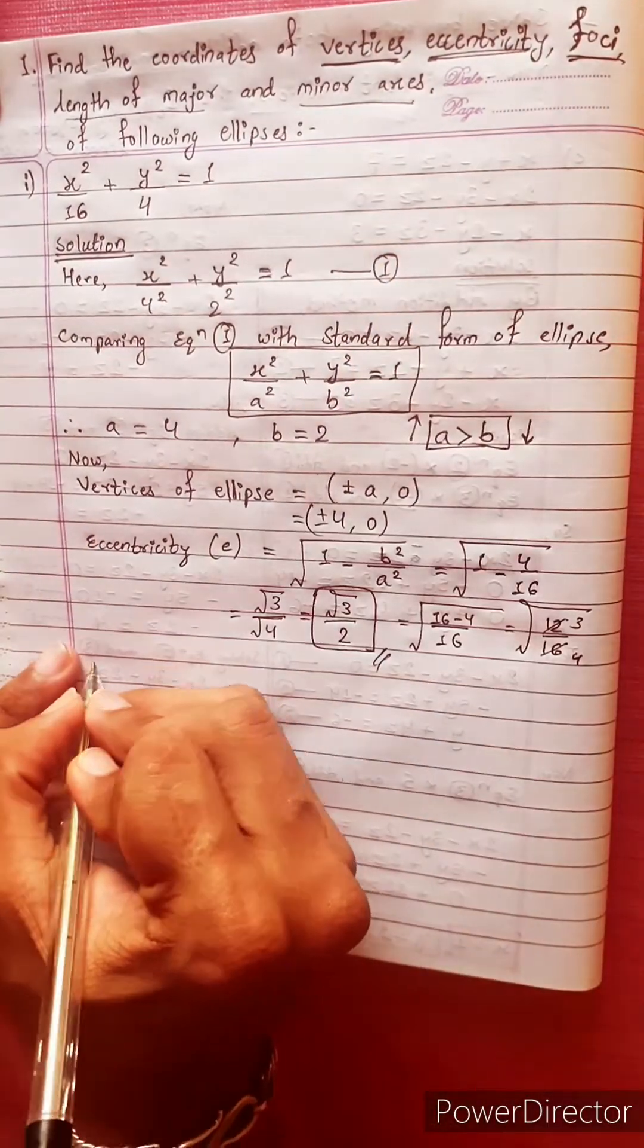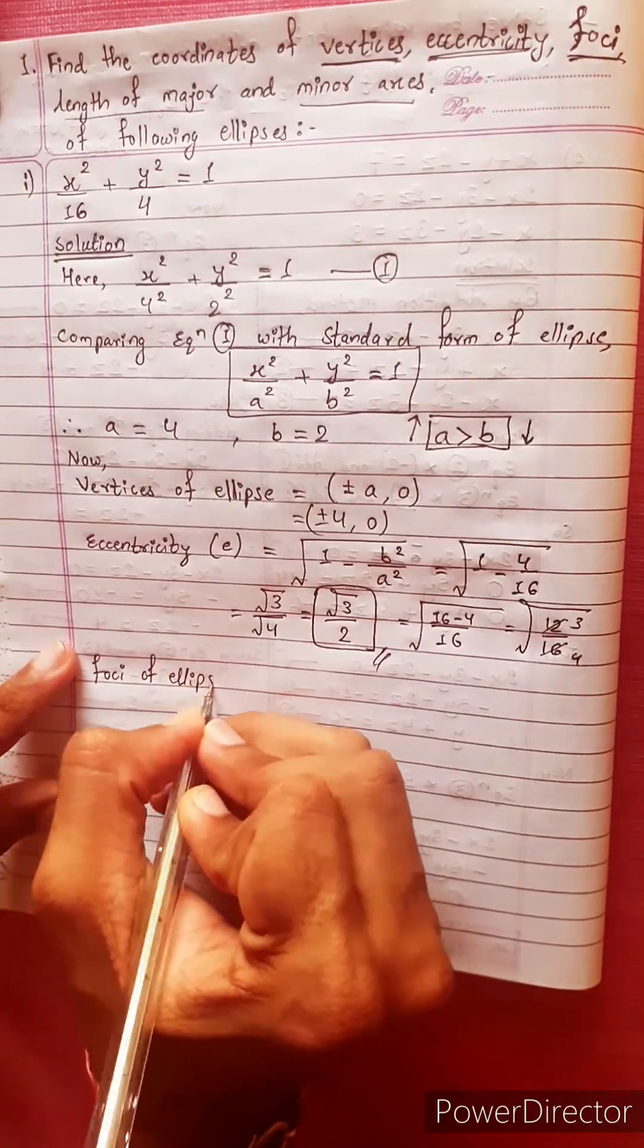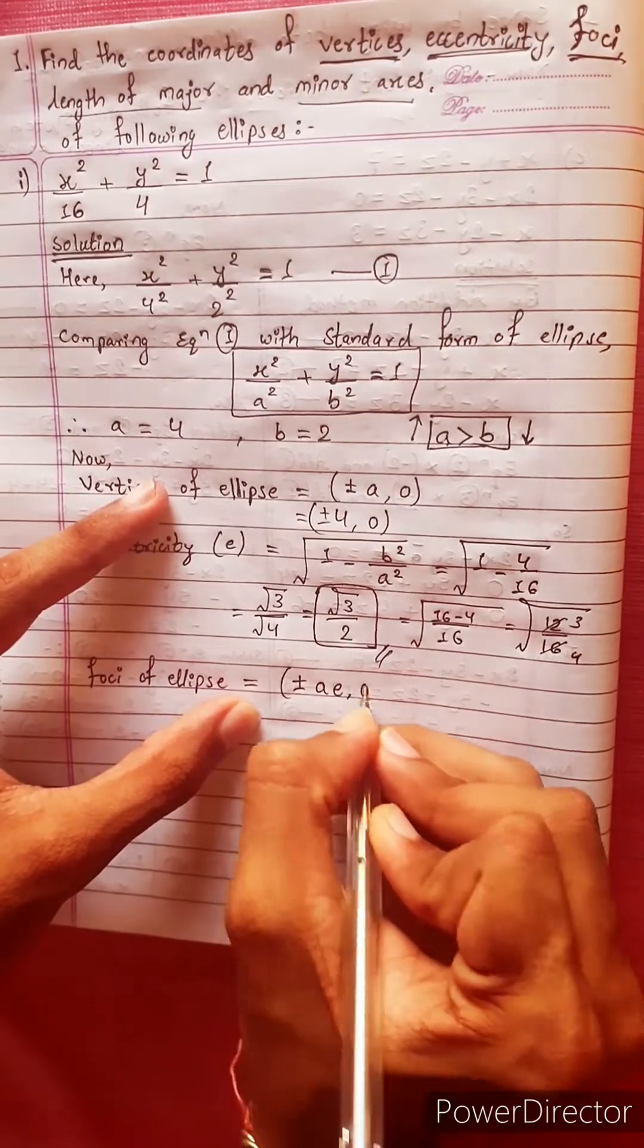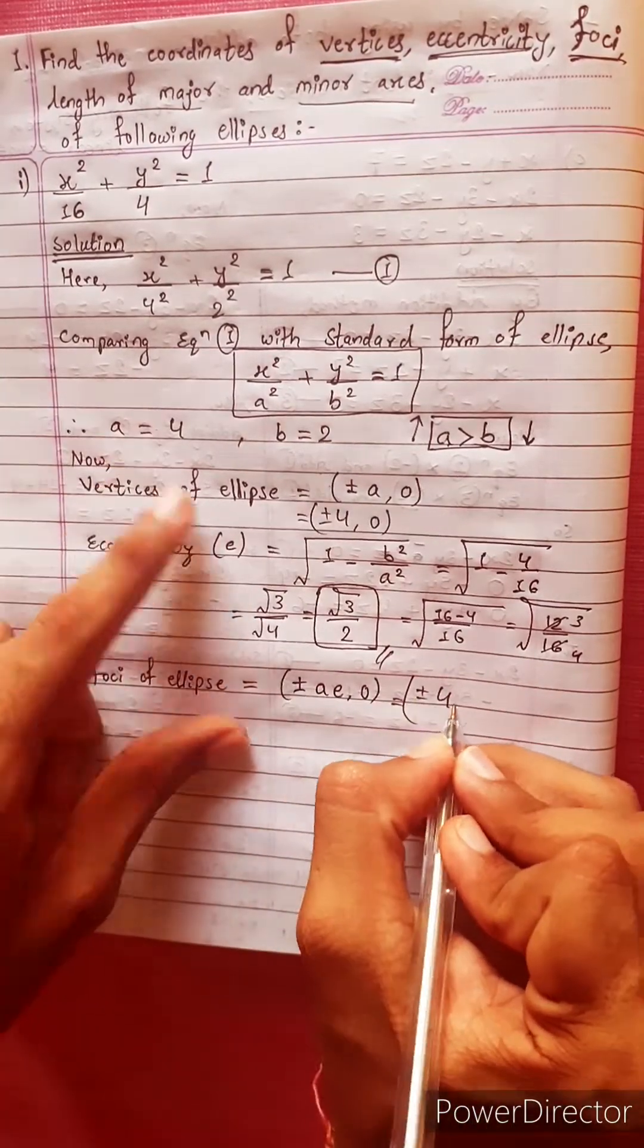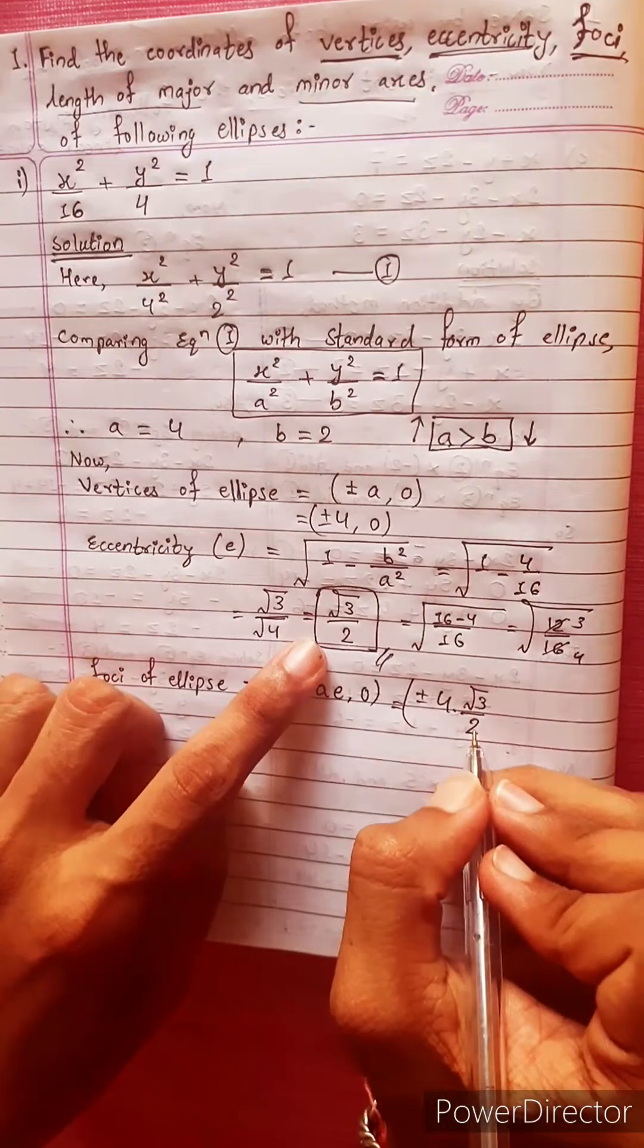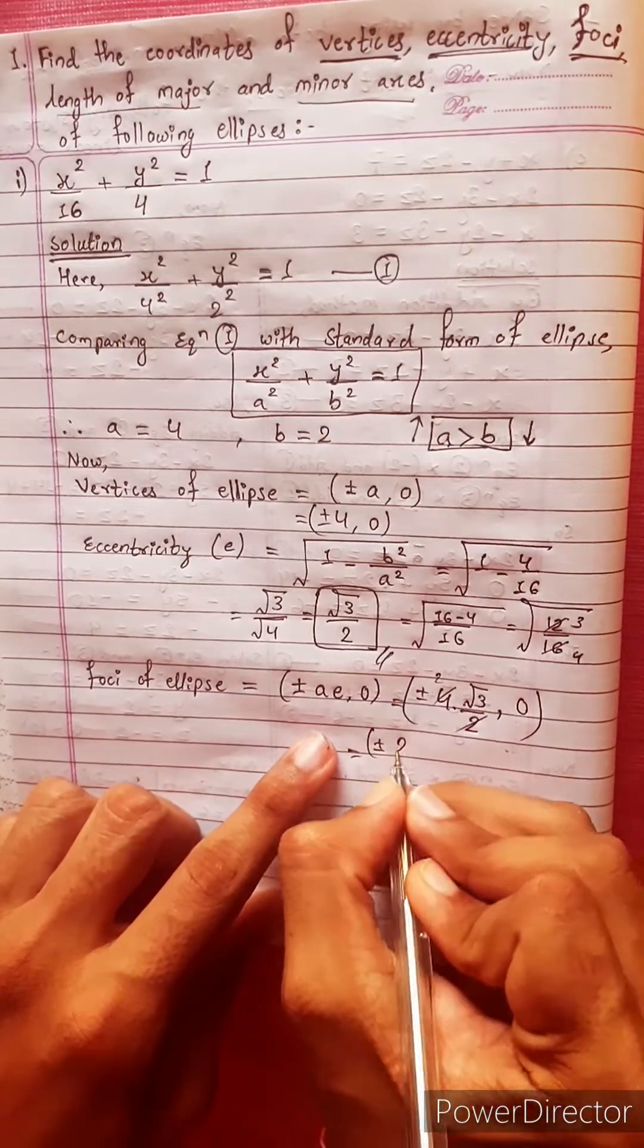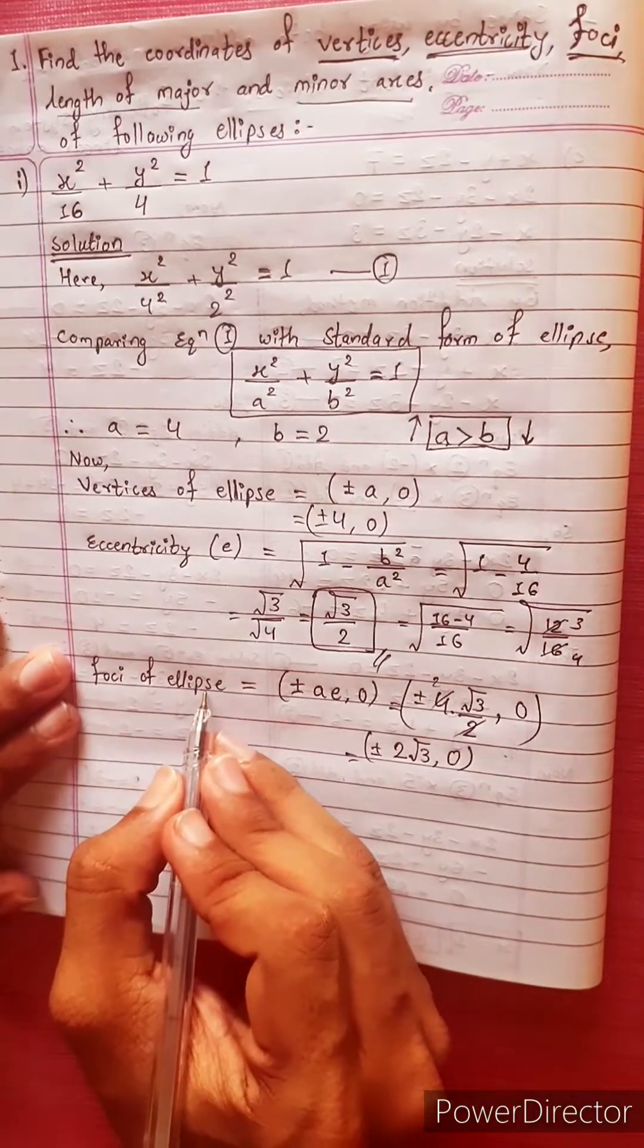Now the foci of the ellipse. The formula is plus minus ae, 0, equals to plus minus a times e. A is 4, e is root 3 by 2, which gives us plus minus 2 root 3, 0. This is the foci of the ellipse.